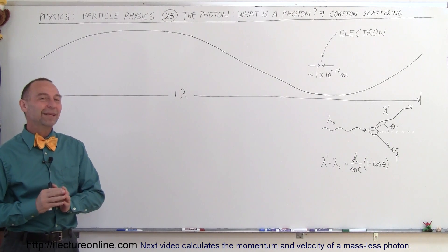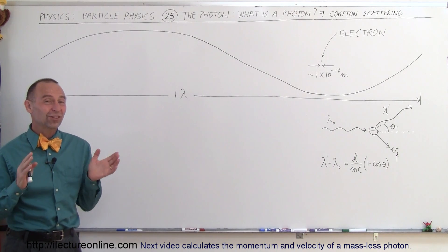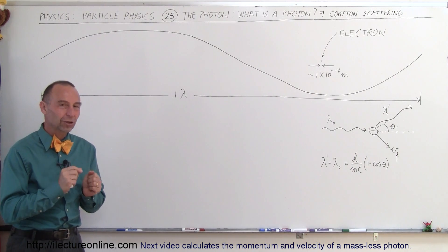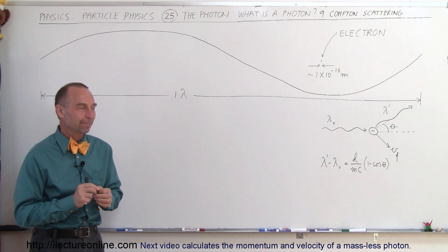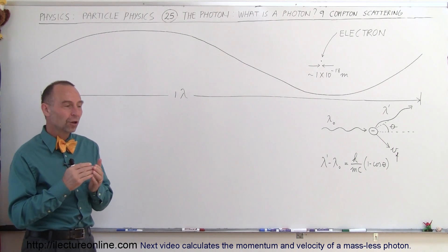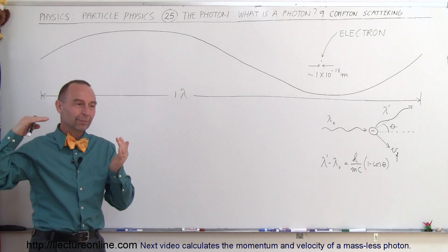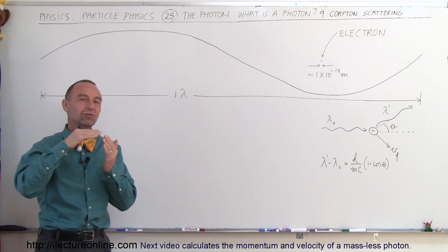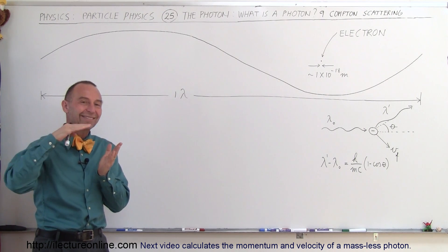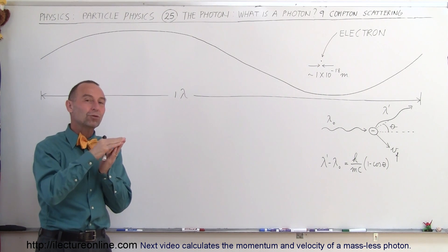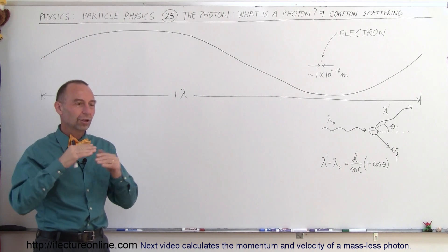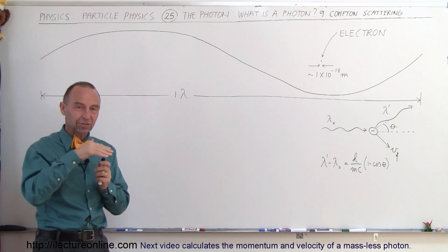Welcome to Electronline. In our quest to understand what a photon is, we're now going to take a look at what we call Compton scattering. Compton discovered that when a photon approaches an electron and comes in at just the right angle, it would be scattered at various angles depending upon the approach vector.